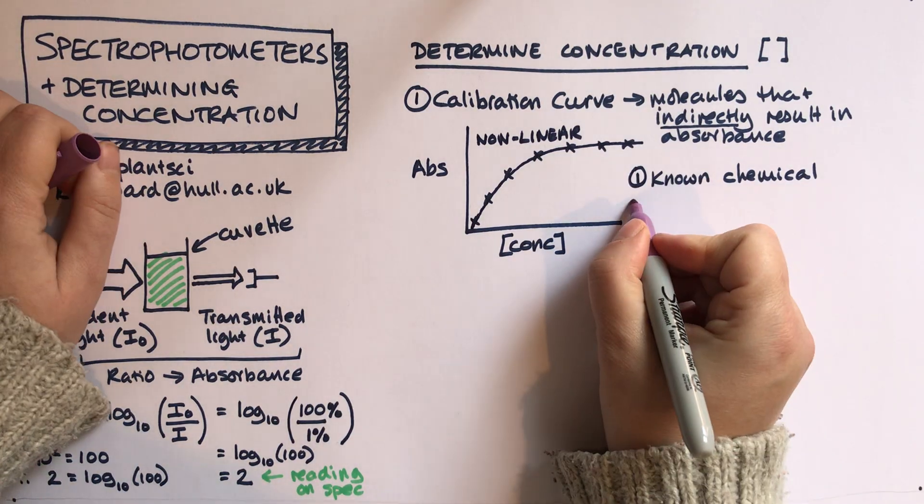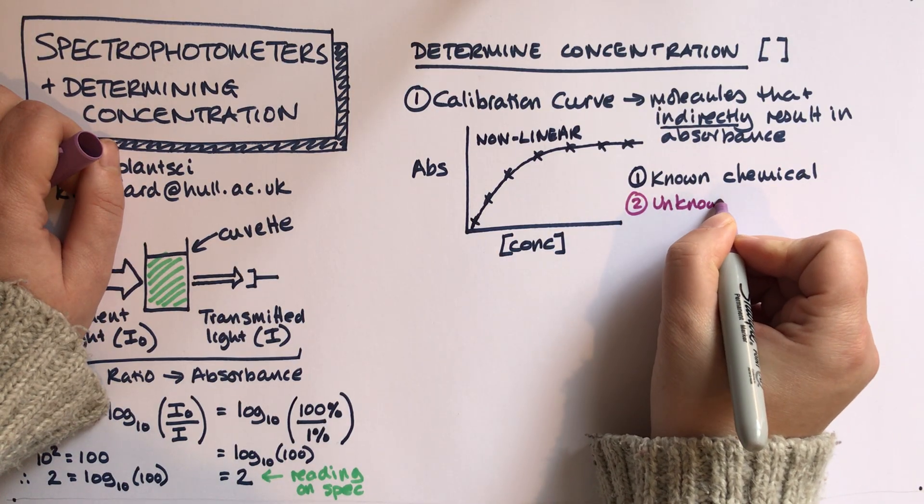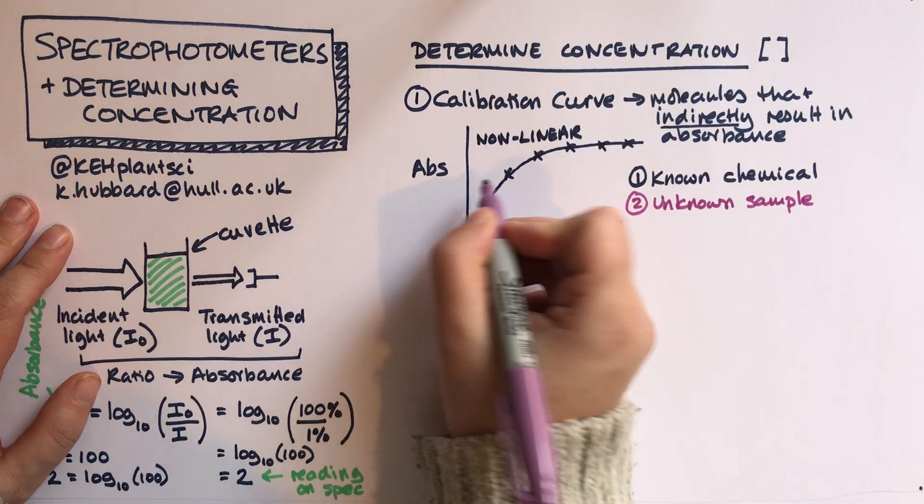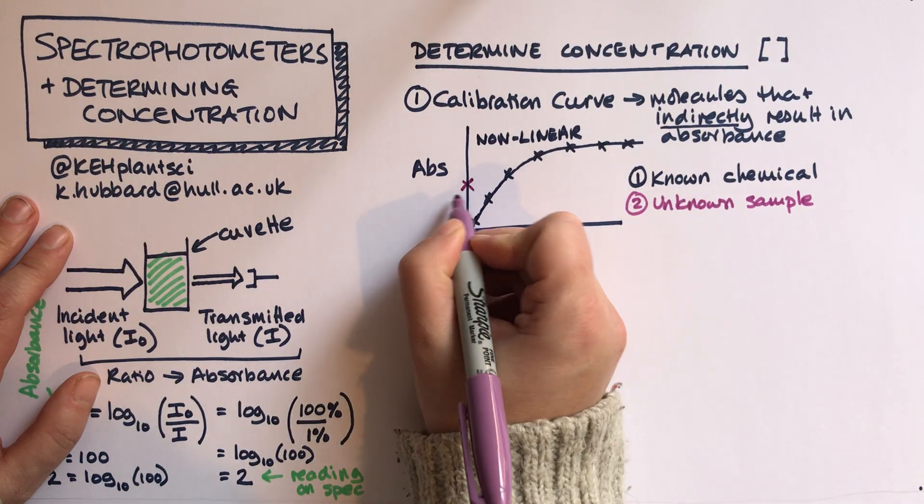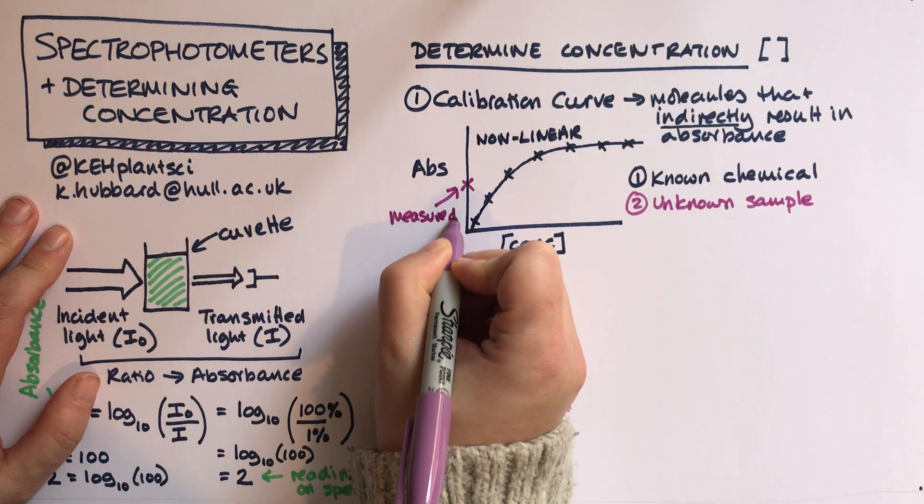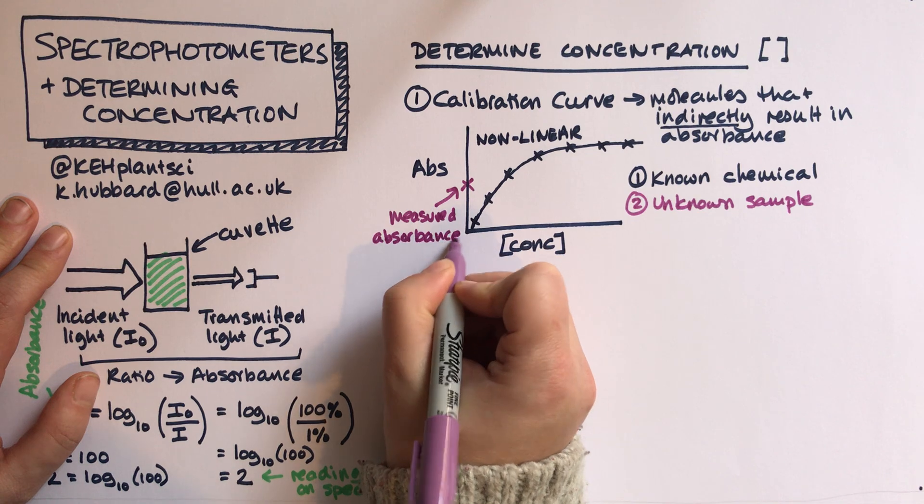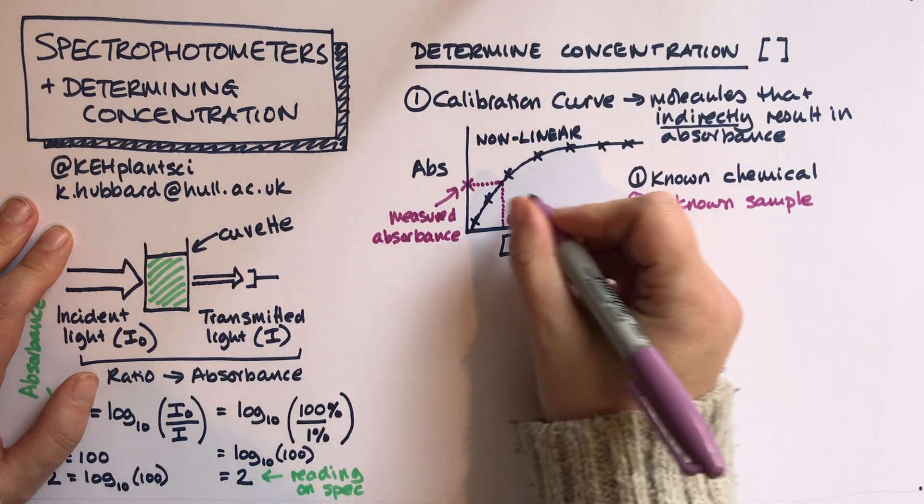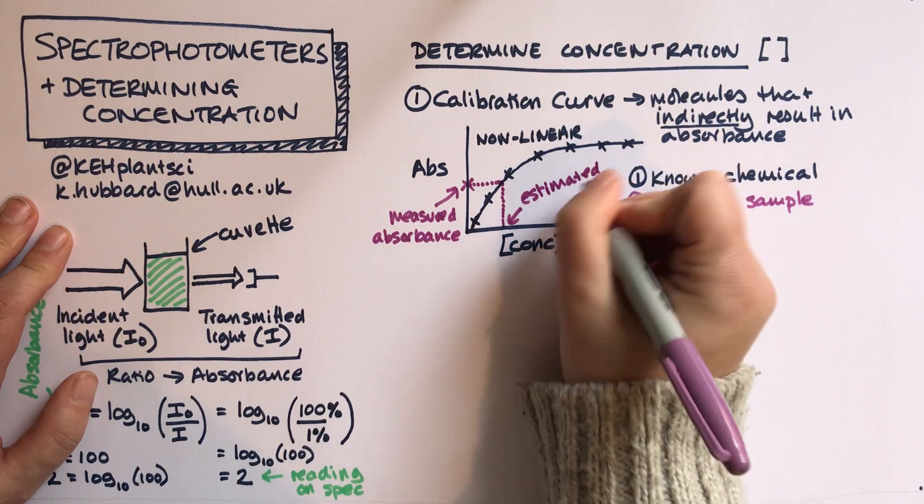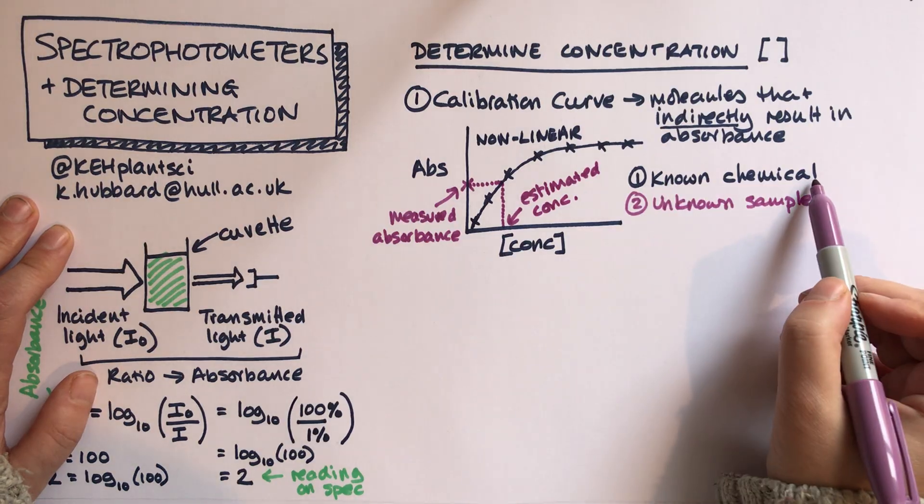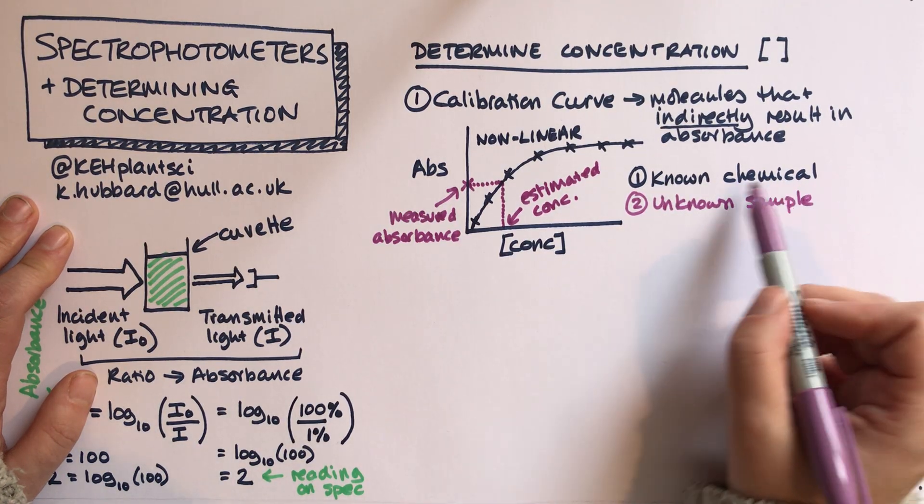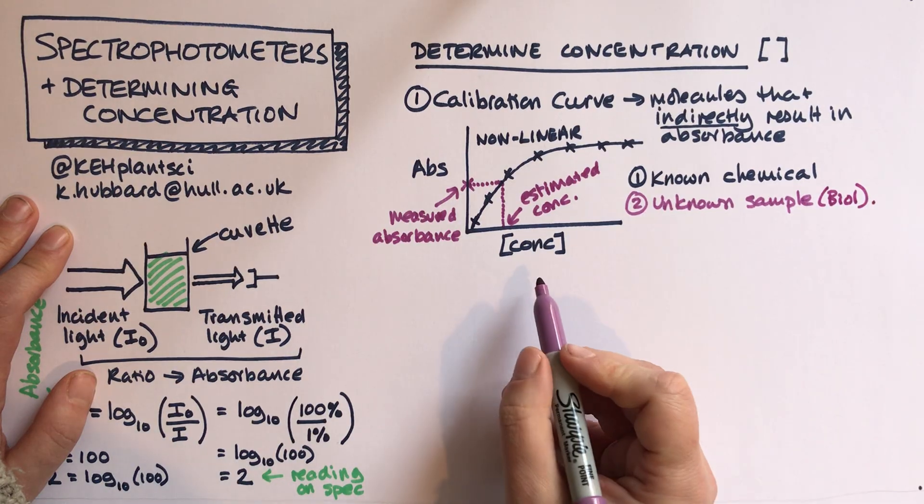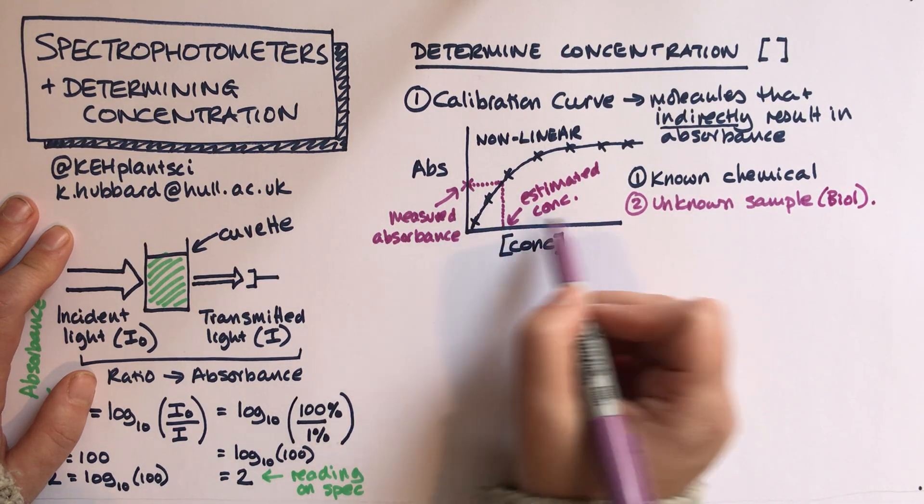We do that for our known chemical first, and then what we do is we'd have an unknown sample. This might be the biological extract that we're actually trying to measure. What we would do is measure its absorbance in the spectrophotometer, and then we'd use that calibration curve to read across to get our estimated concentration.